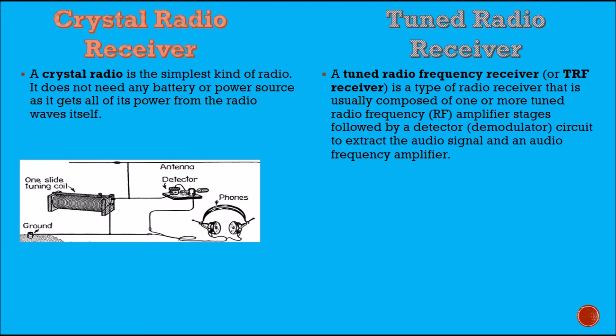We slowly progress to a much better technology and we found the tuned radio frequency receiver, which is a type of radio receiver that is usually composed of one or more tuned radio frequencies, amplifiers, followed by a detector — that is a demodulator circuit — to extract the audio signal, and an audio frequency amplifier.